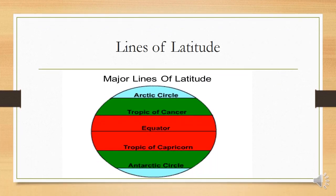Now boys and girls, here we have our major lines of latitude. The Arctic Circle, the Tropic of Cancer, the Equator, the Tropic of Capricorn and the Antarctic Circle.